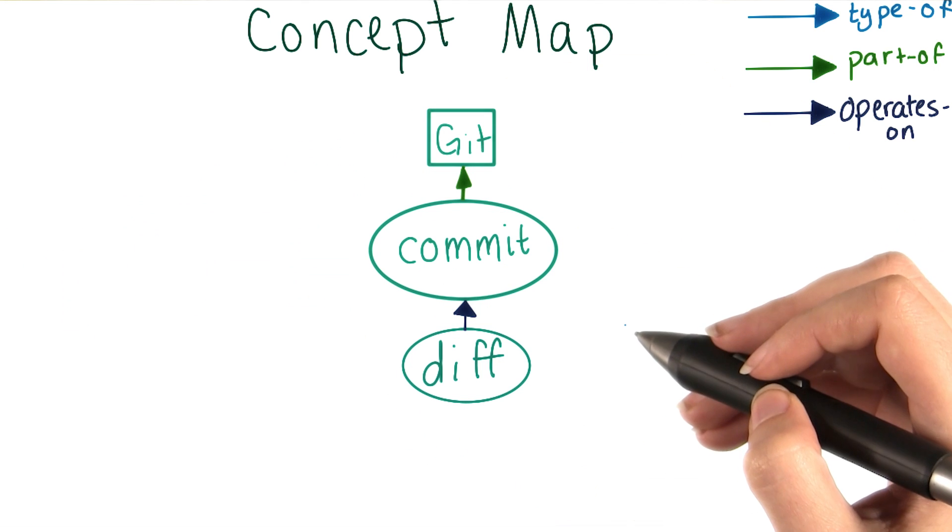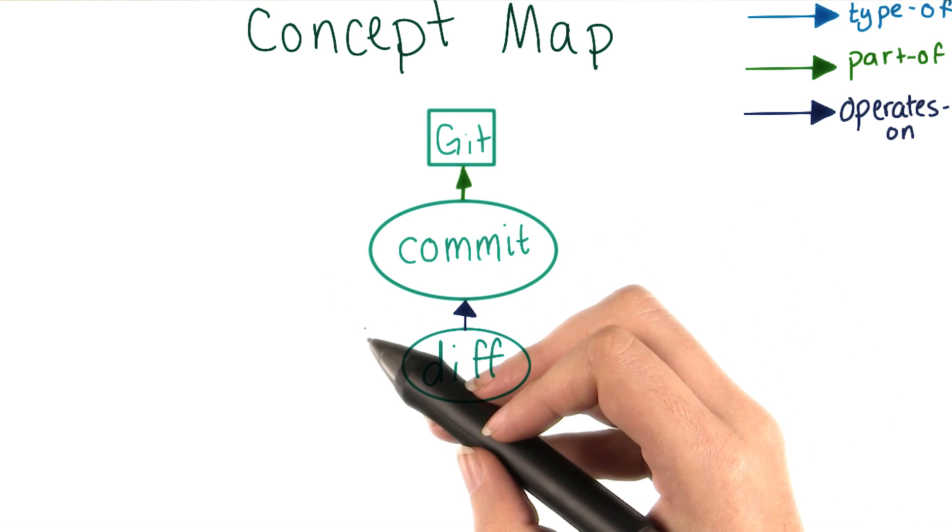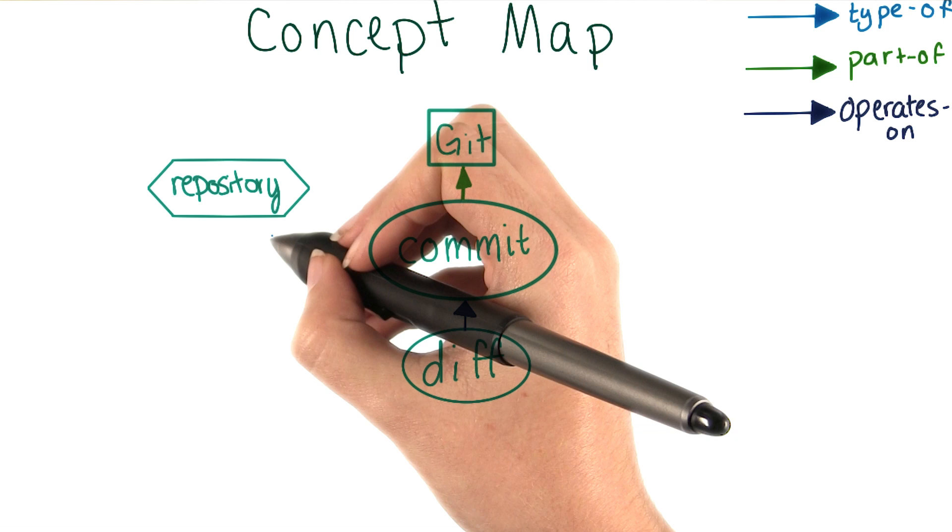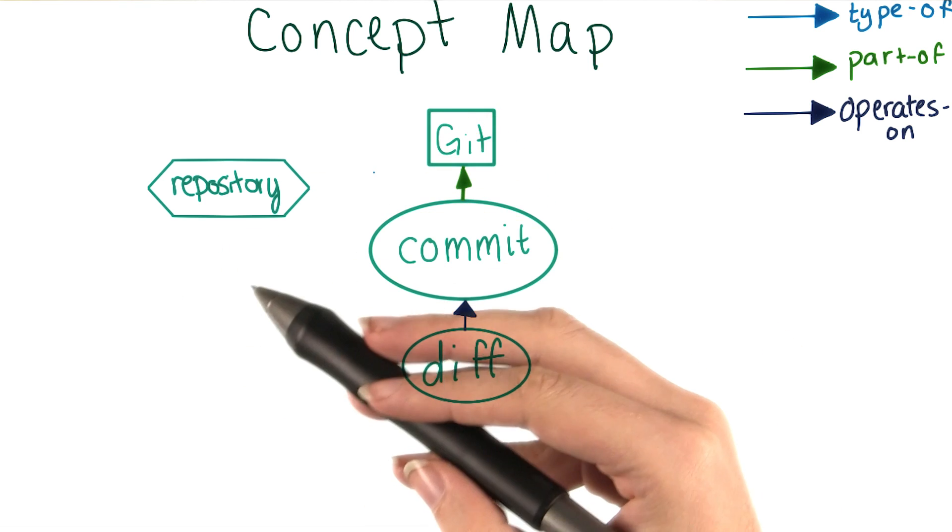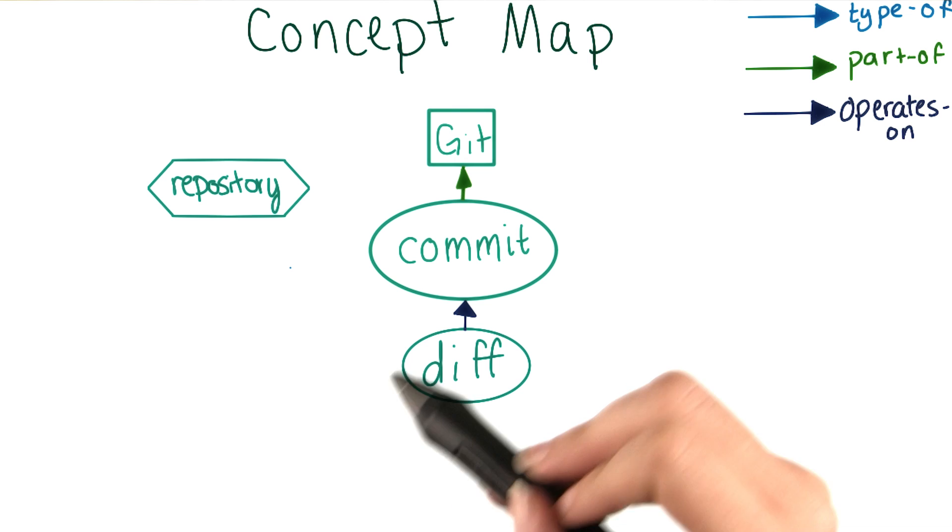That's a lot simpler. One new concept we've talked about is the idea of a git repository. A git repository is a collection of files that are tracked by git as a cohesive unit. You can have lots of different git repositories on your computer, and we'll talk later about how repositories can interact with one another.